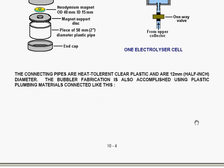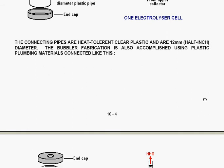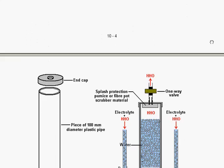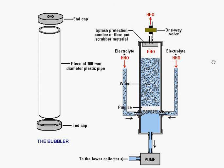The bubbler fabrication is also accomplished using plastic plumbing materials. It's very simple. You just have an end cap, a 100 mm diameter plastic pipe and an end cap. And that is the construction of the device itself.